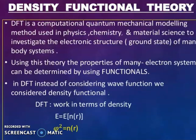Density functional theory, DFT is a computational quantum mechanical modeling method used in physics, chemistry and material science to investigate the electronic structure and ground state of many body systems. Using this theory, the properties of many electron systems can be determined by using functionals. In DFT, instead of considering wave function, we consider density function. DFT works in terms of density n and phi. Here you can see the energy is the function of r and phi squared equals n.